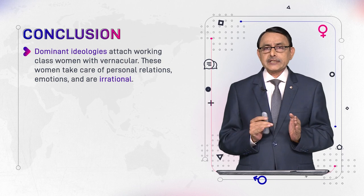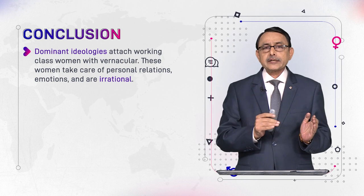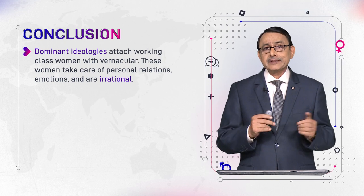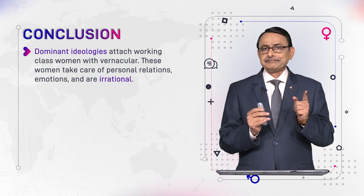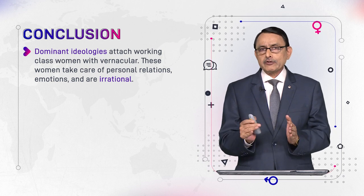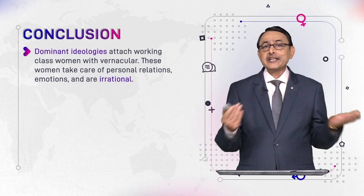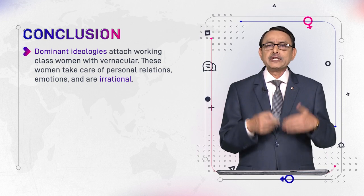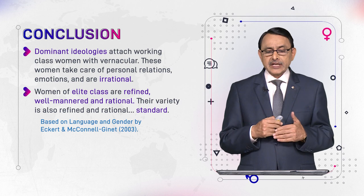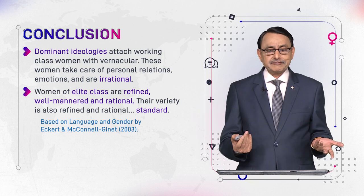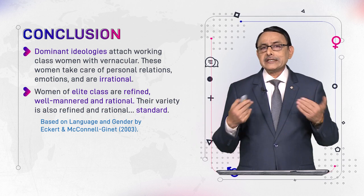We conclude that dominant ideologies — language ideologies — attach working-class women to vernacular. This is how gender enters the picture. Working-class women speak vernacular, so these women are associated with personal relations, emotions, and are regarded as irrational because the variety they speak is considered irrational. Women of the elite class, on the other hand, are seen as refined, well-mannered, and rational, and their variety is also regarded as refined and rational — their variety is standard.